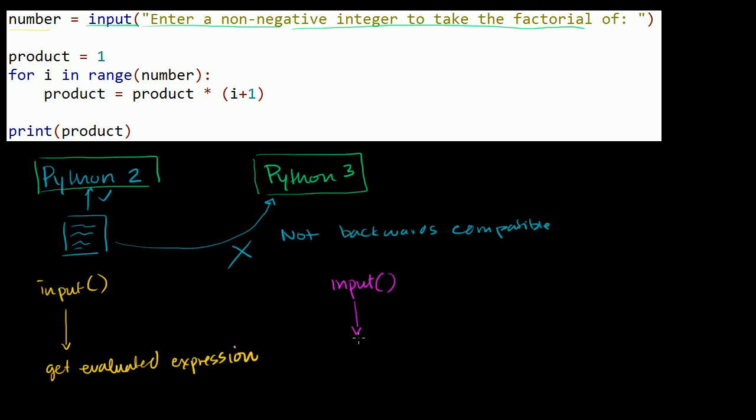It returns a string. This is a word you're going to hear a lot of in computer science, and I'll explain it in multiple videos. But it returns a string of what the user inputted. And you're saying, Sal, what is a string? And this is actually a good introduction. A string is a string of characters.